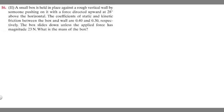In this problem, we're told a small box is held in place against a rough vertical wall by someone pushing on it with a force directed upward at 28 degrees above the horizontal. The coefficients of static and kinetic friction between the box and the wall are 0.4 and 0.3 respectively. The box slides down unless the applied force has a magnitude of 23 newtons. What is the mass of the box?